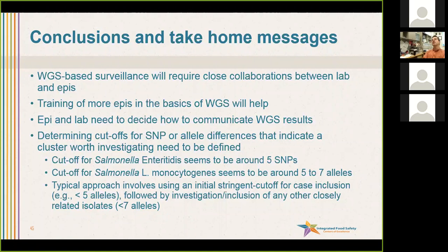The conclusions — and these are a start of a conversation based on discussions with New York, Minnesota, and CDC. The key part is whole genome sequence-based surveillance will require close collaboration between lab and epi, and the building of a much tighter relationship than we even had with PFGE for most states. We will need training of more epidemiologists in the basics of whole genome sequencing to build a level of comfort with the tools and data, to start to speak the lingo, know what it means, and be able to have discussions with the lab. But ultimately, what Minnesota said, the most important thing is to decide how to communicate whole genome sequence results.